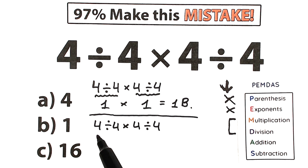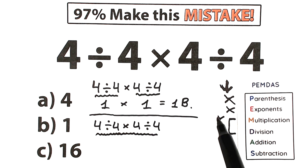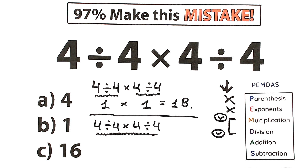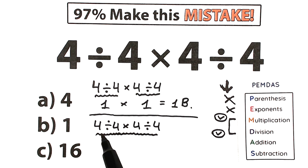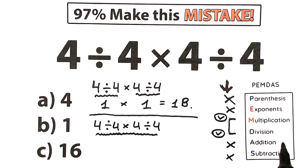We can see we have a division sign here, then a multiplication sign, then another division sign — so all the operations present are multiplication and division. As for the last step, addition and subtraction — our challenge has no addition or subtraction signs, so we skip that part. We only have the multiplication and division group.